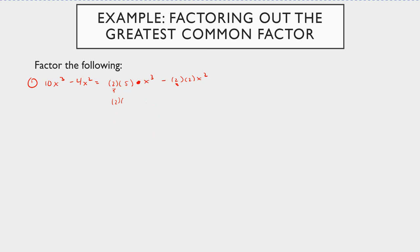Each term has a 2 and an x squared, so I'm going to factor those out — take out a 2x squared. In the first term I'm left with 5x, and then just minus 2. So this factors as 2x squared times the quantity 5x minus 2, and this is now factored completely.